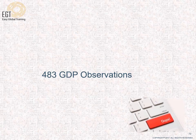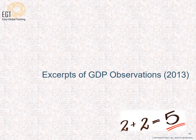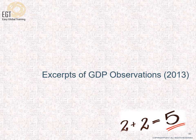In the following slides I have gathered different occasions of 483s or warning letters that were issued to different companies for failing to follow GDP in their documentation and record keeping. I'm going to show you some excerpts of observations that were issued by FDA to different companies in the year 2013 for violating different GDP rules and regulations.